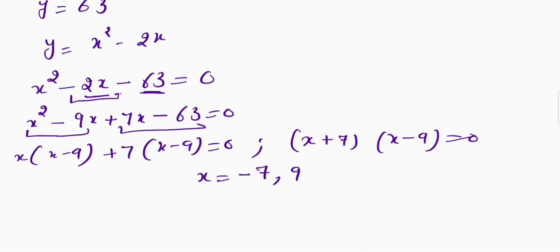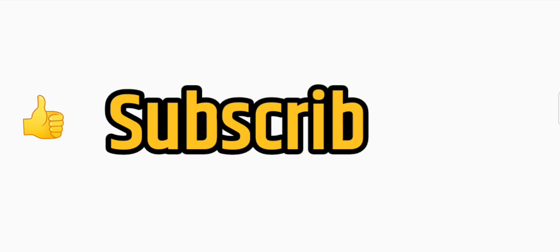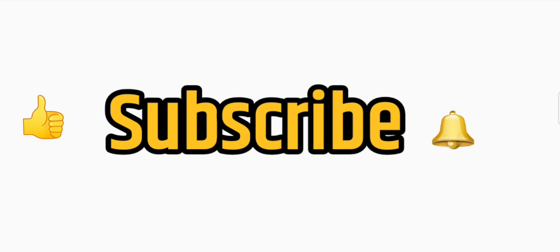So the four values of x are: 1 plus or minus square root of negative 24, negative 7, and 9. If you like the video please give a thumbs up. Do subscribe to my channel for more interesting videos and hit the bell icon for further notifications. Thank you.